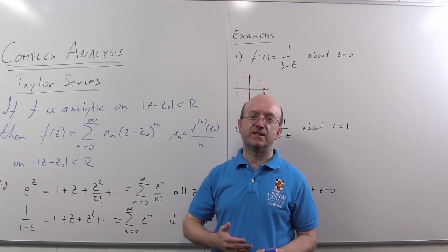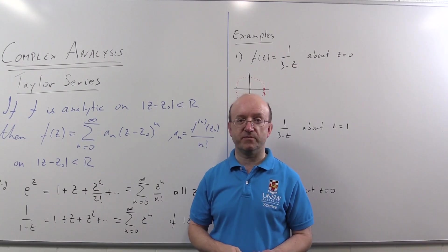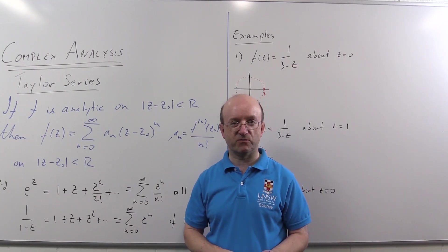And that arbitrary constant is basically telling you which branch of the logarithm you've picked. We looked at branches of the log in one of my earlier videos.